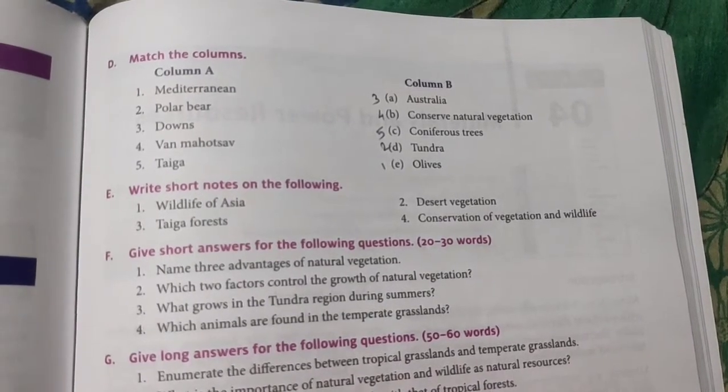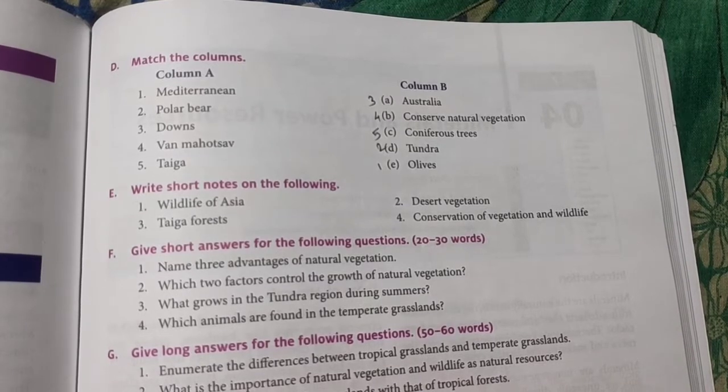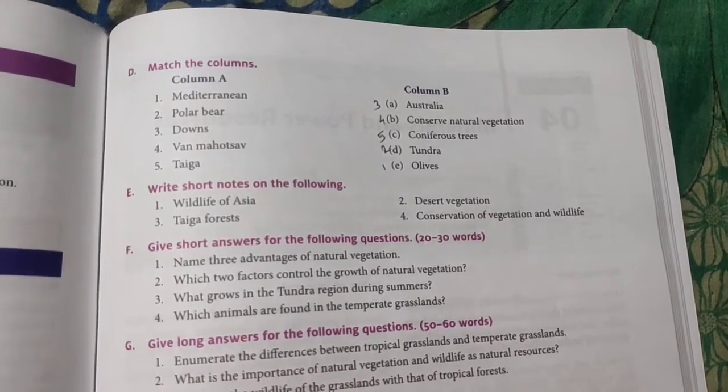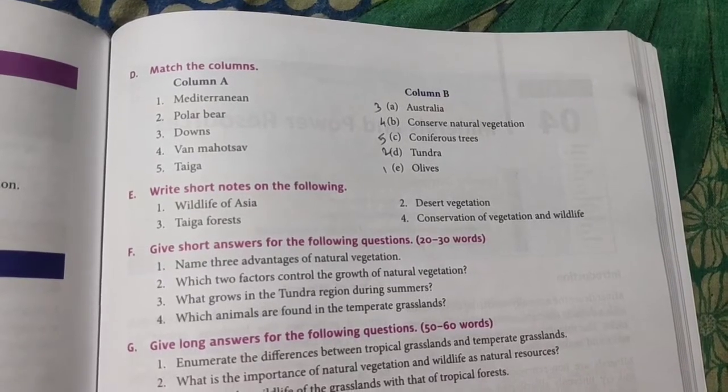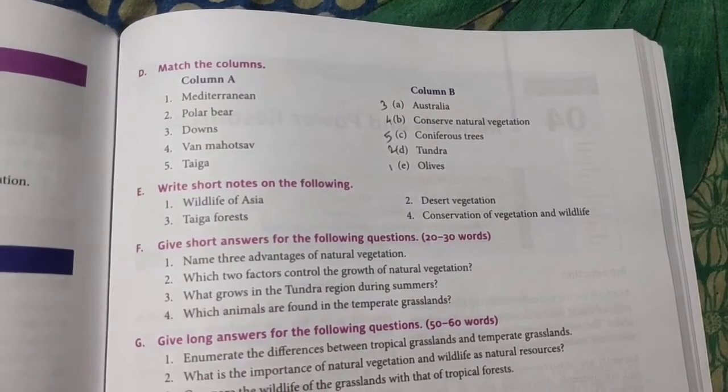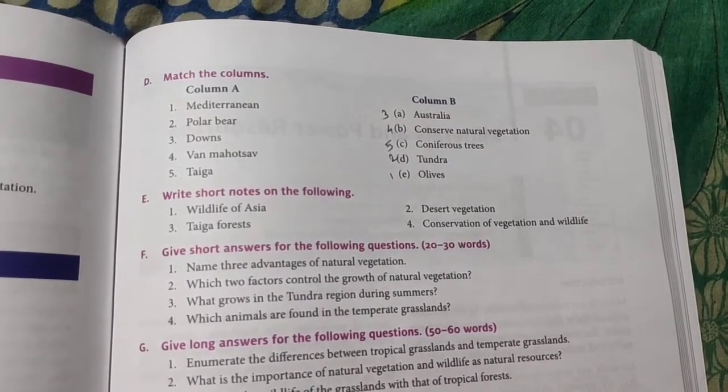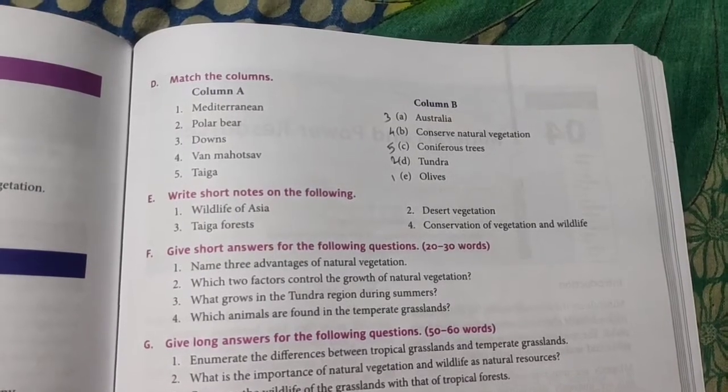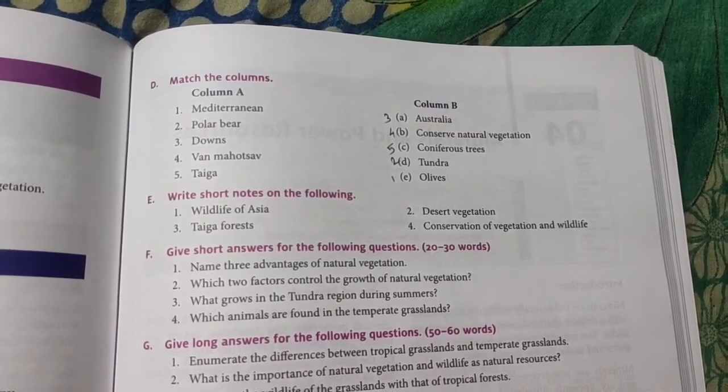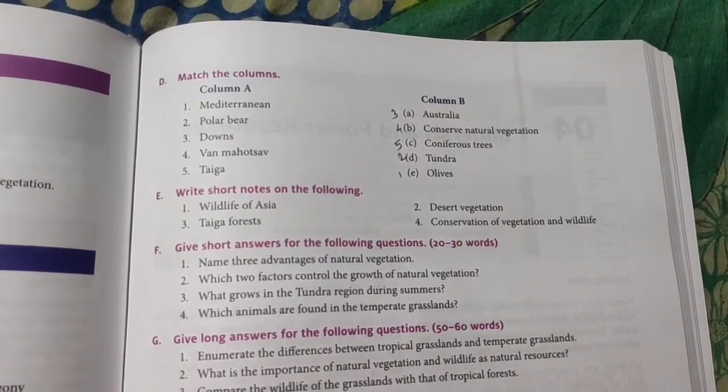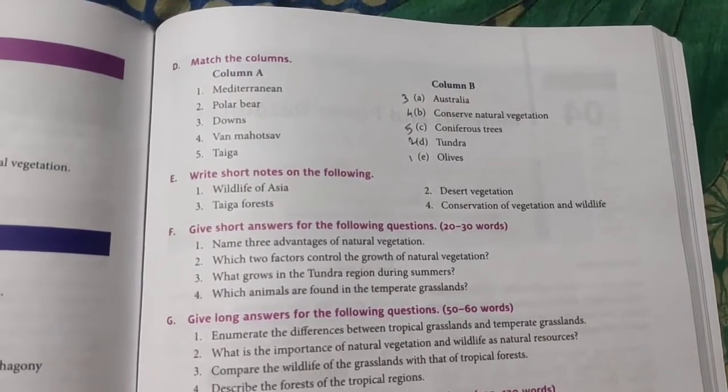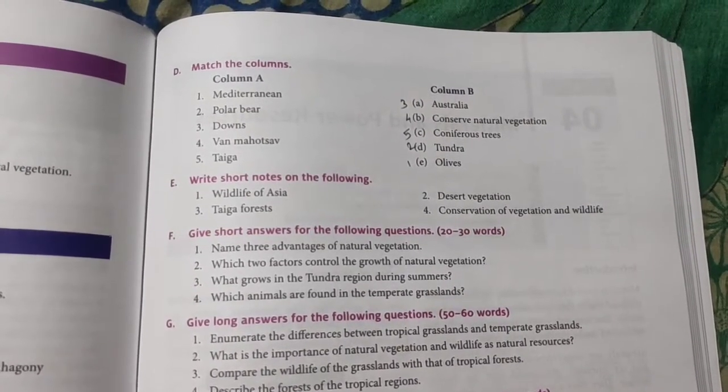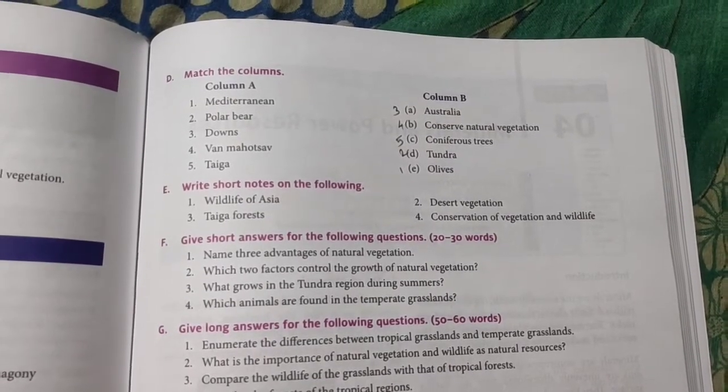Match the columns. First one: Mediterranean. Second: polar bear. Three: downs. Four: one of them. Five: taiga. Other side: Australia, conserve natural vegetation, coniferous trees, tundra, and olives. Mediterranean will be connected with olives. Polar bear definitely will be connected with tundra. Downs is the name of grassland that can be found in Australia. One of them is related to conserving natural vegetation and forest. Taiga is a coniferous type of tree, so the answer will be coniferous trees.